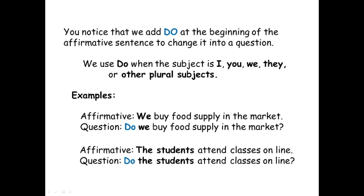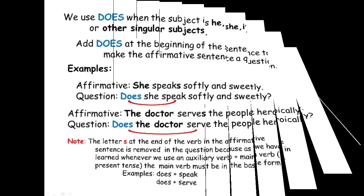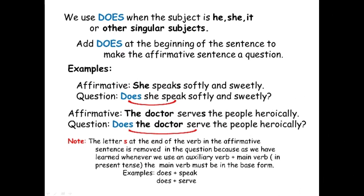So you see, it's very easy — we just have to put the auxiliary verb do at the beginning of the sentence before the plural subjects. Now let's have the auxiliary verb does. We use does when the subject is he, she, it, or other singular subjects. Does is used for singular subjects. Add does at the beginning of the sentence to make the affirmative sentence a question.